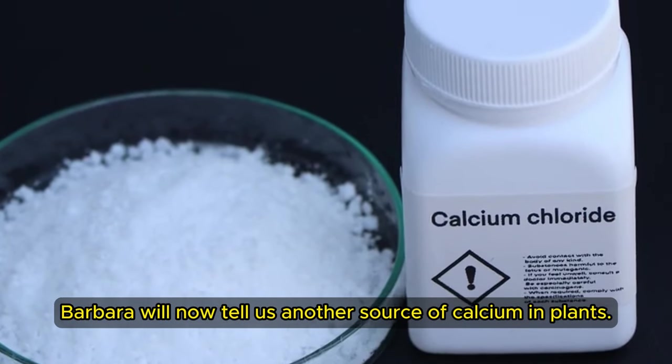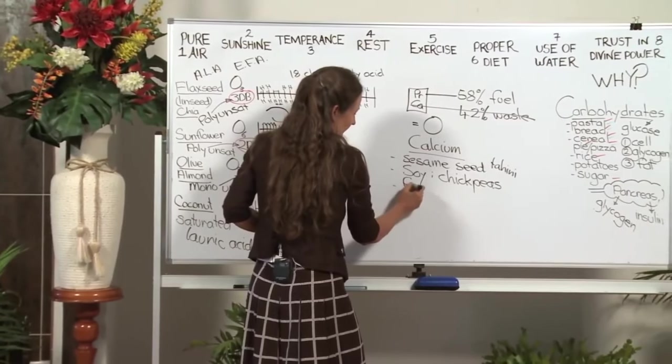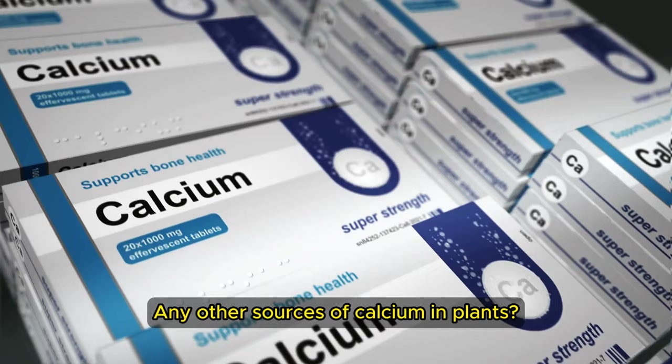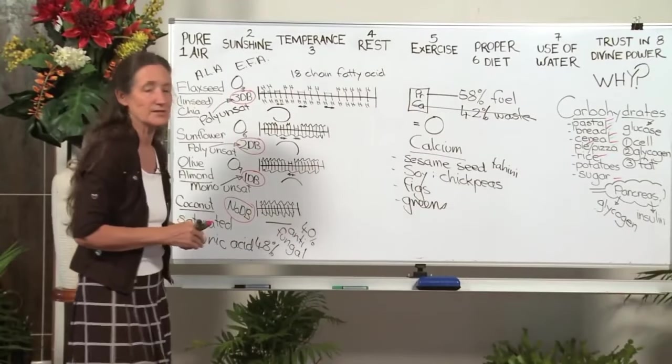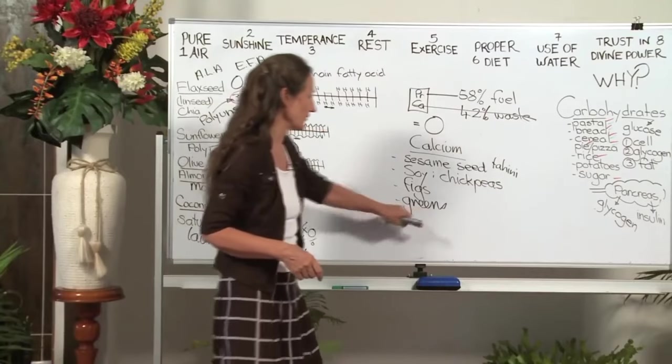Barbara will now tell us another source of calcium in plants. Figs! Your dried figs are quite a high source. Any other sources of calcium in plants? Calcium is one of the alkaline minerals and it is found in high amounts in your greens.